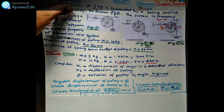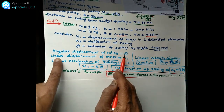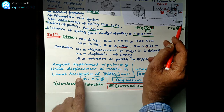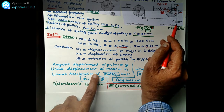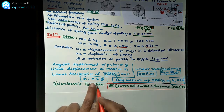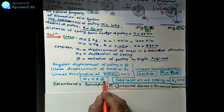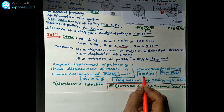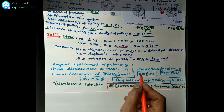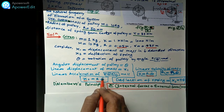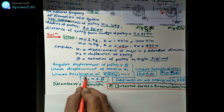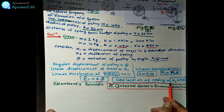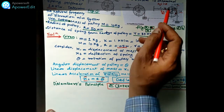The angular displacement is theta. The linear displacement of the mass is x1. The linear velocity is x1-dot = R·theta-dot, and the linear acceleration is x1-double-dot = R·theta-double-dot. The deflection of the spring is x2 = small r·theta.